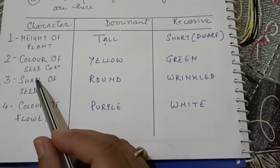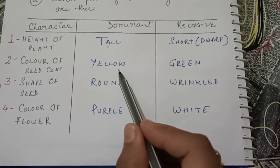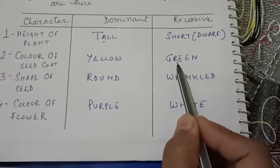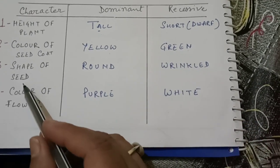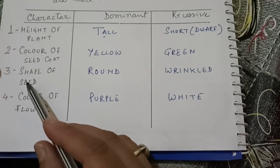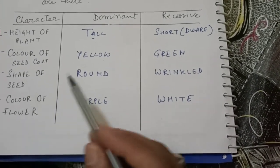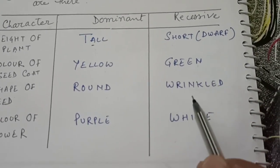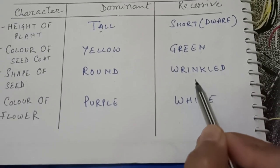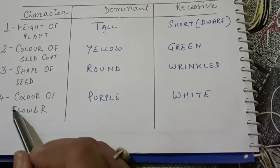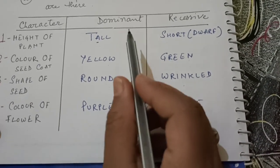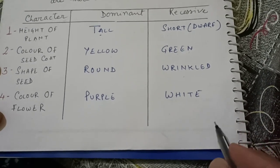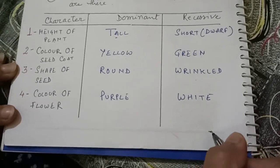Next is the color of the seed coat. The dominant one is yellow color of the seed coat and the recessive character is green. Next character is the shape of seed — dominant is round shape and recessive is wrinkled shape. Next is the color of flower — dominant trait is purple and white is the recessive trait.